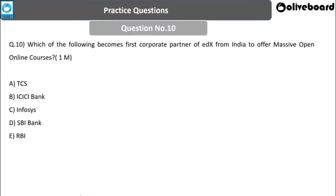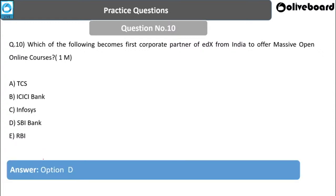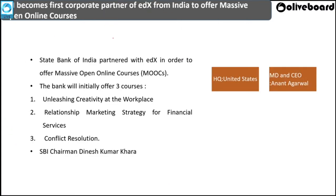Next question: Which Indian organization became the first corporate partner of edX to offer Massive Open Online Courses (MOOCs)? Options: TCS, ICICI Bank, Infosys, SBI, or RBI. The answer is SBI. SBI becomes the first corporate partner from India to collaborate with edX to offer MOOCs, which have gained traction during the COVID pandemic as education shifts online.